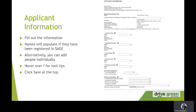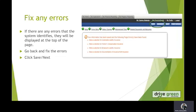They also need some accounting information and some insurance information. Once you are done, please click Save at the top. If there are any errors that the system identifies, they will be displayed at the top of the page. Please go back and fix the errors and then click Save Next.